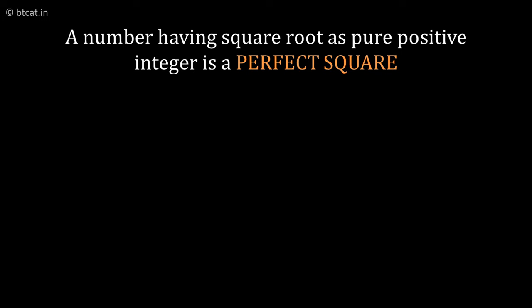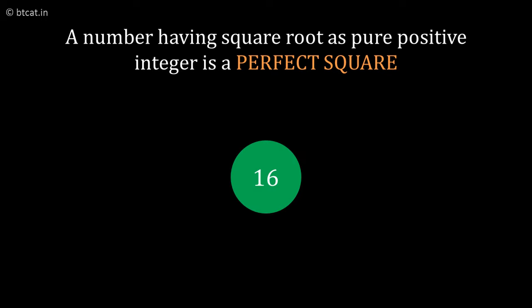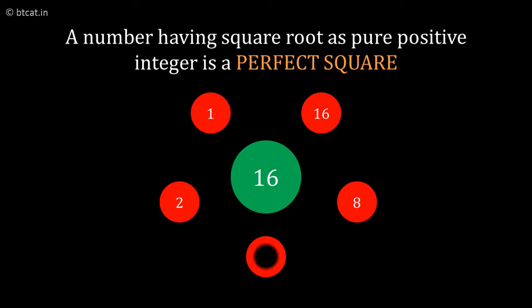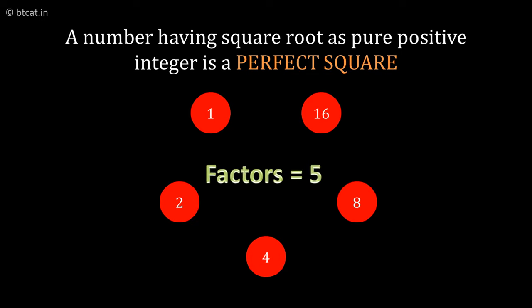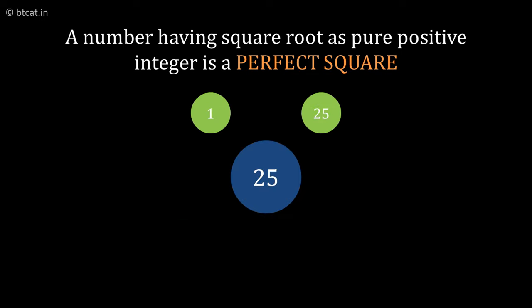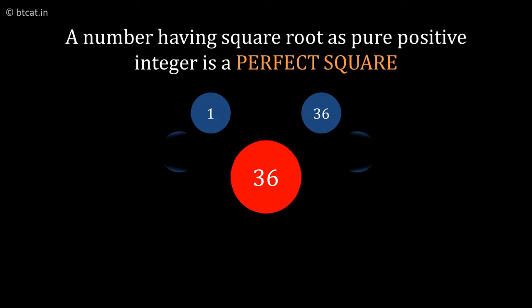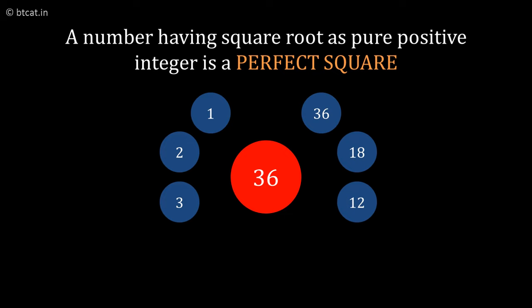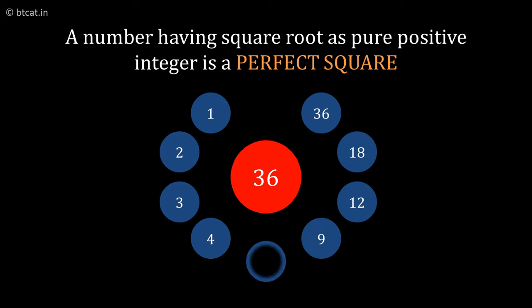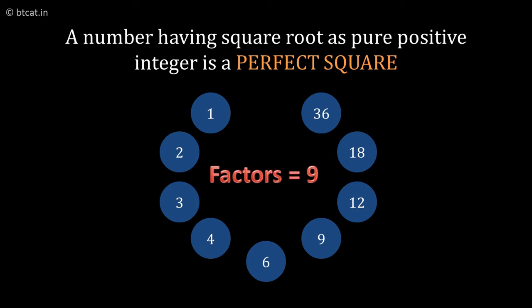Looking at the total factors of these numbers: 16 has factors 1, 2, 4, 8, and 16 — that is 5 factors. 25 has factors 1, 5, and 25 — that is 3. And 36 has factors 1, 2, 3, 4, 6, 9, 12, 18, and 36 — that is 9 factors.